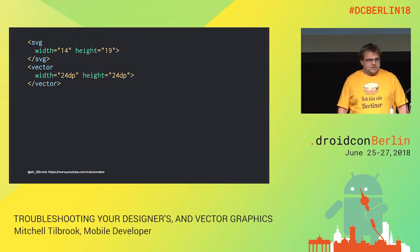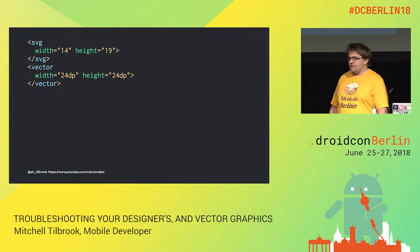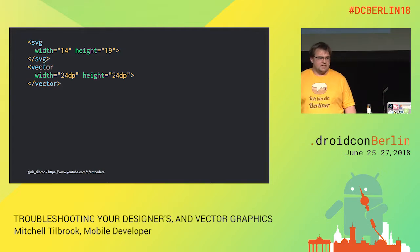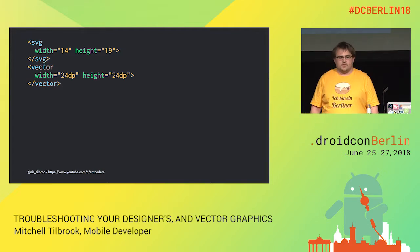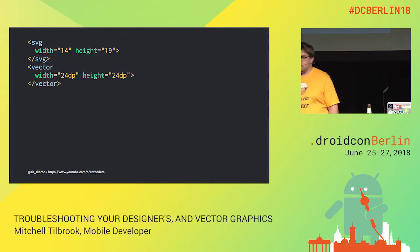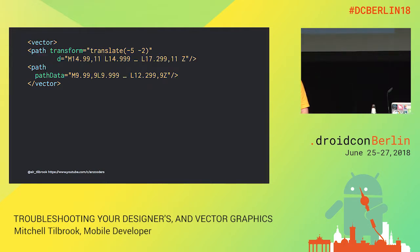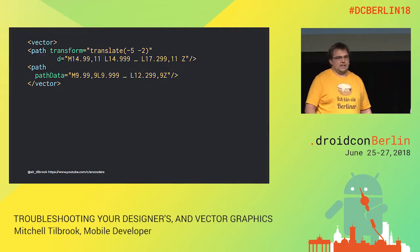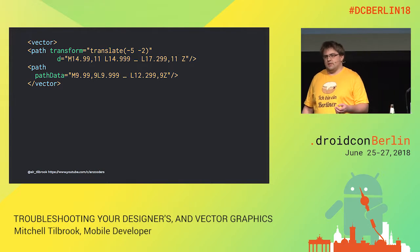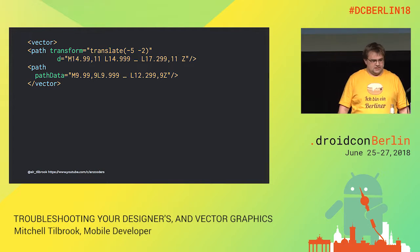Here we see something that gives us an idea about what's going wrong. The size in our SVG is 14 by 19, while the size in our vector drawable is 24 by 24. And that translate has disappeared. When importing into Android Studio, the translates are actually inlined — so any transformation that's been applied to the path data will now be inlined into that path data.